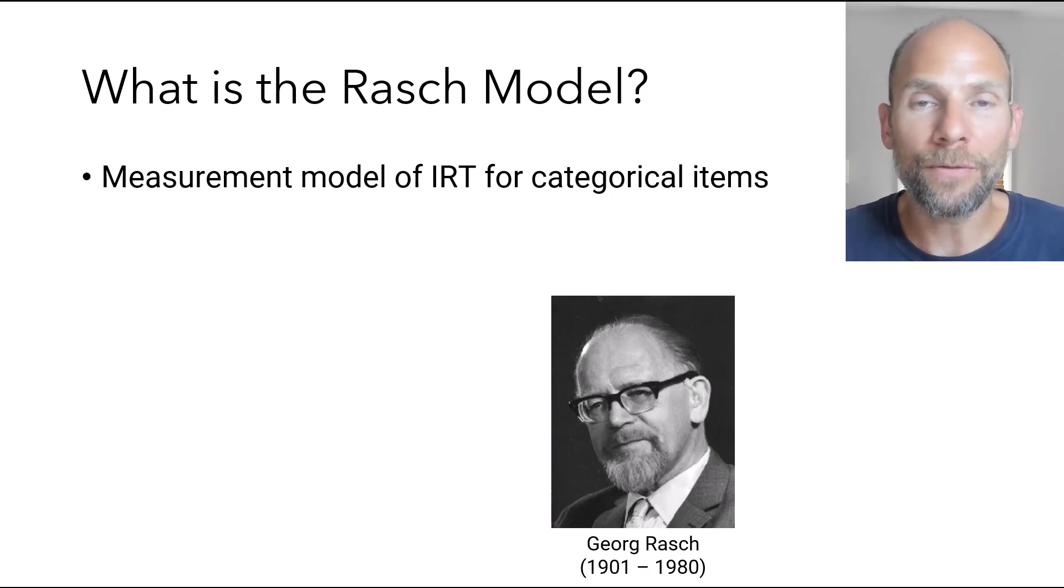In its classical form, the Rasch Model serves to analyze binary or dichotomous items. So items that are scored as 0 and 1. For example, 0 for an incorrect test item response and 1 for correct item response. Or when you have questionnaire items that are scored yes or no, that would qualify as a binary item.